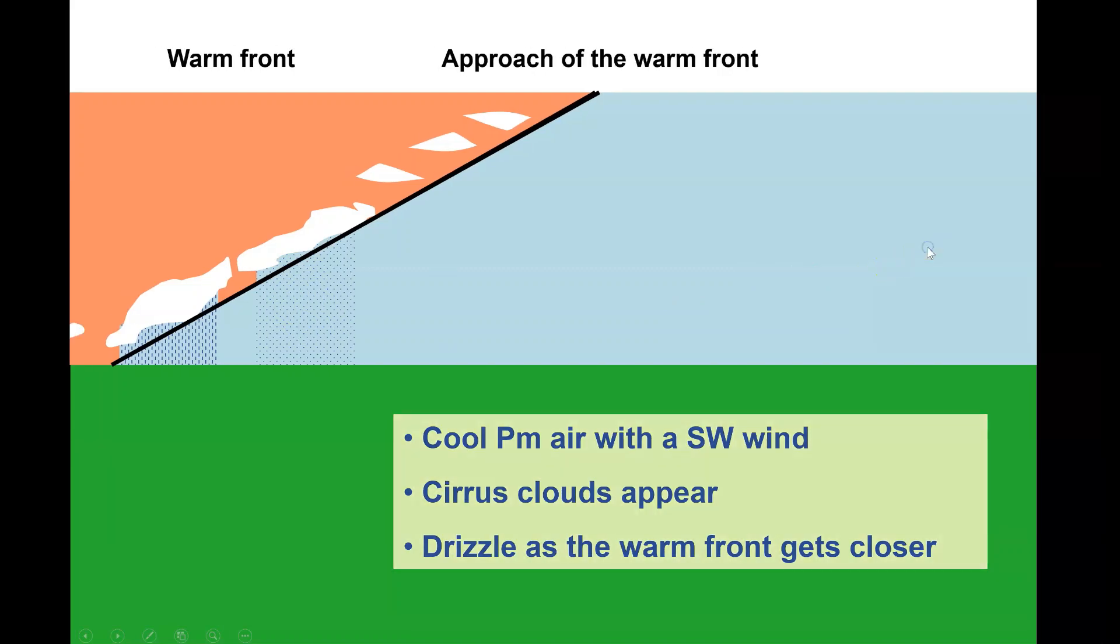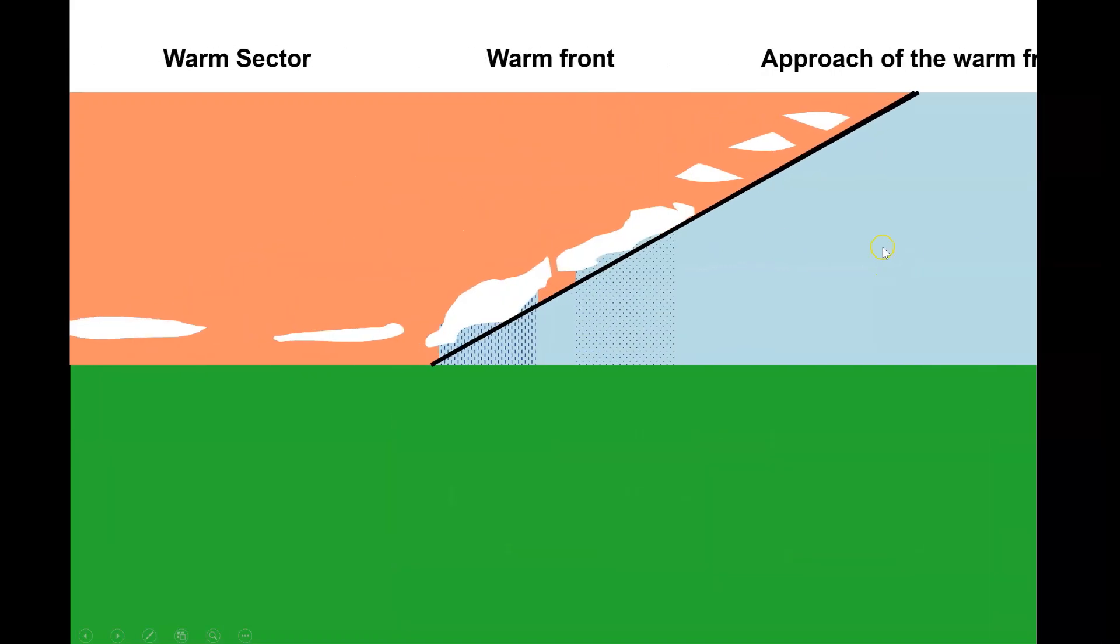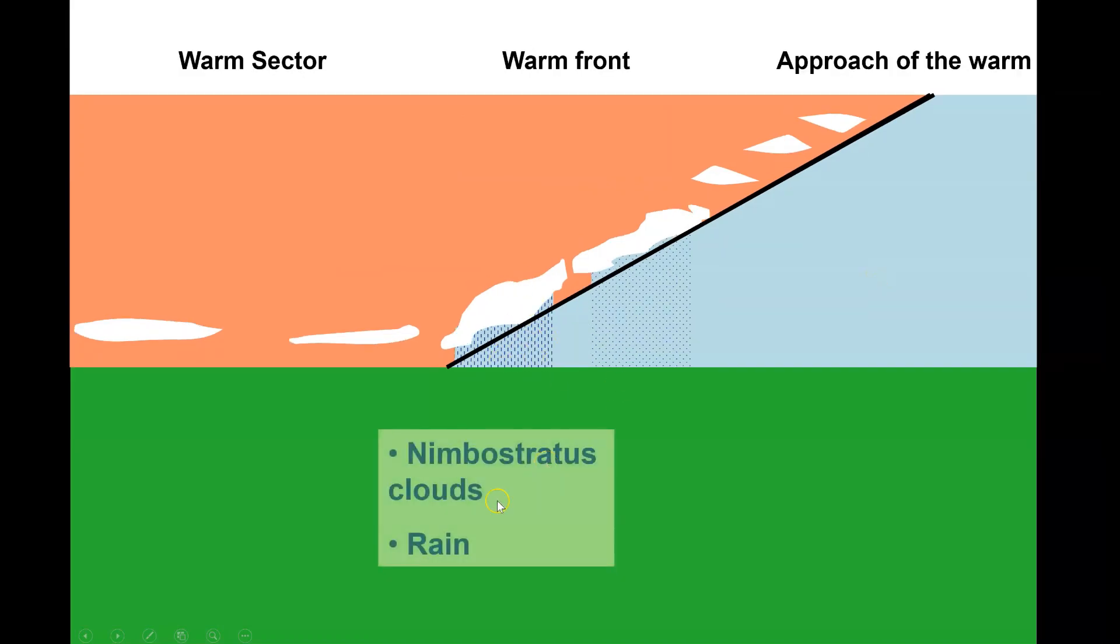Then it moves across. The next part of the depression that we experience as we're standing here is the warm front. The warm front brings nimbostratus clouds, so you'll get a layer cloud there. Nimbo means rain bringing, so surprise surprise, the warm front brings the rain.